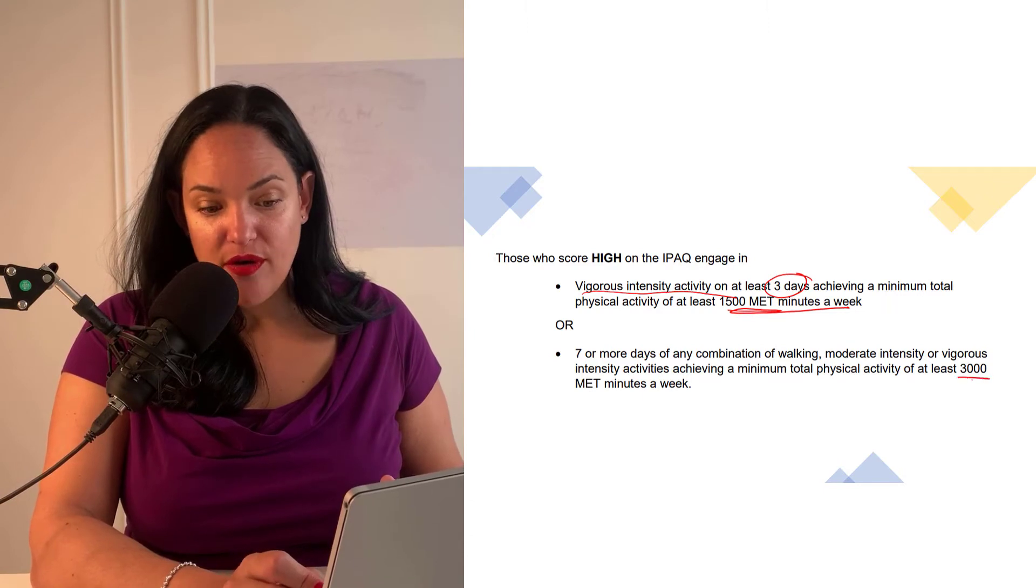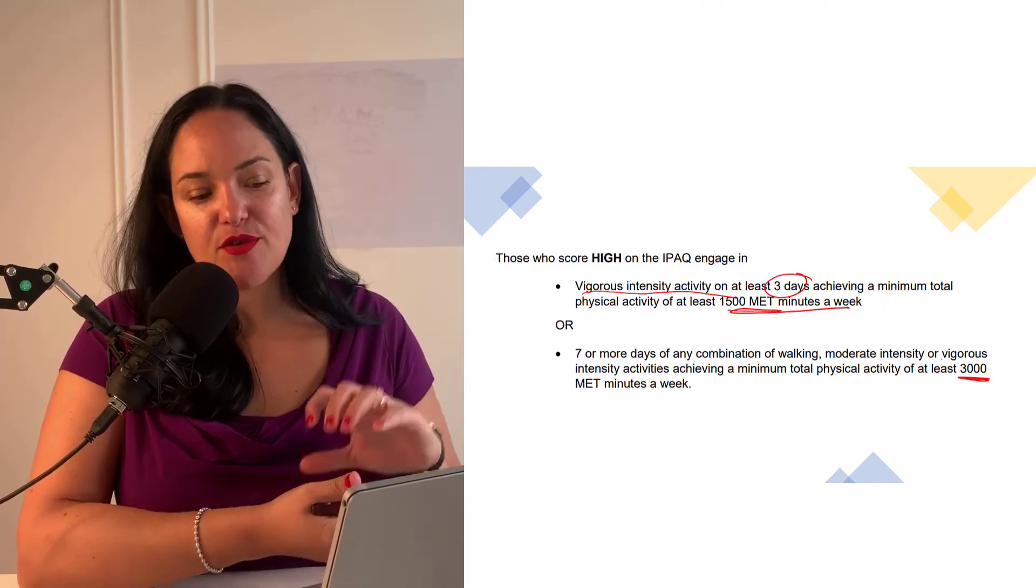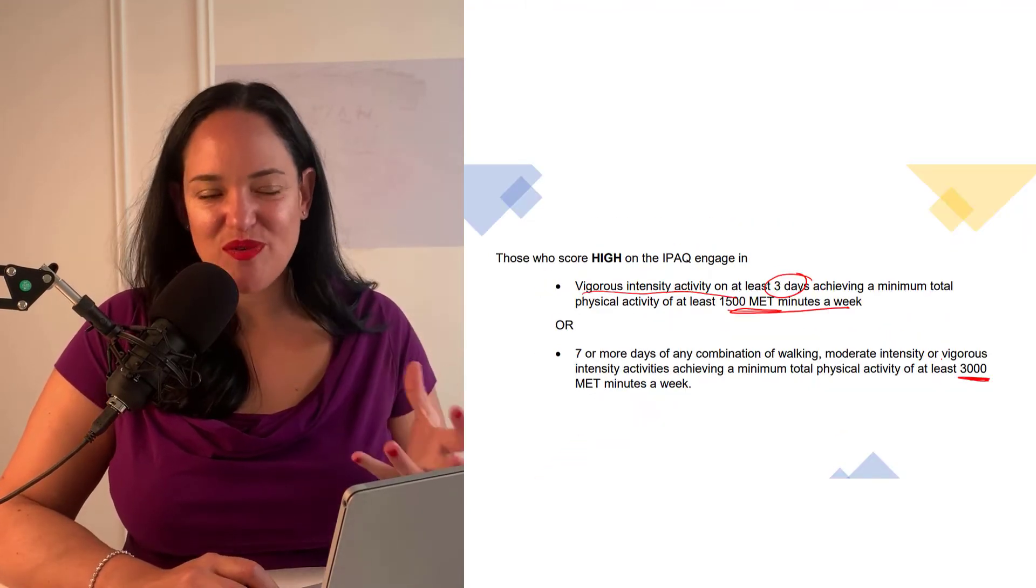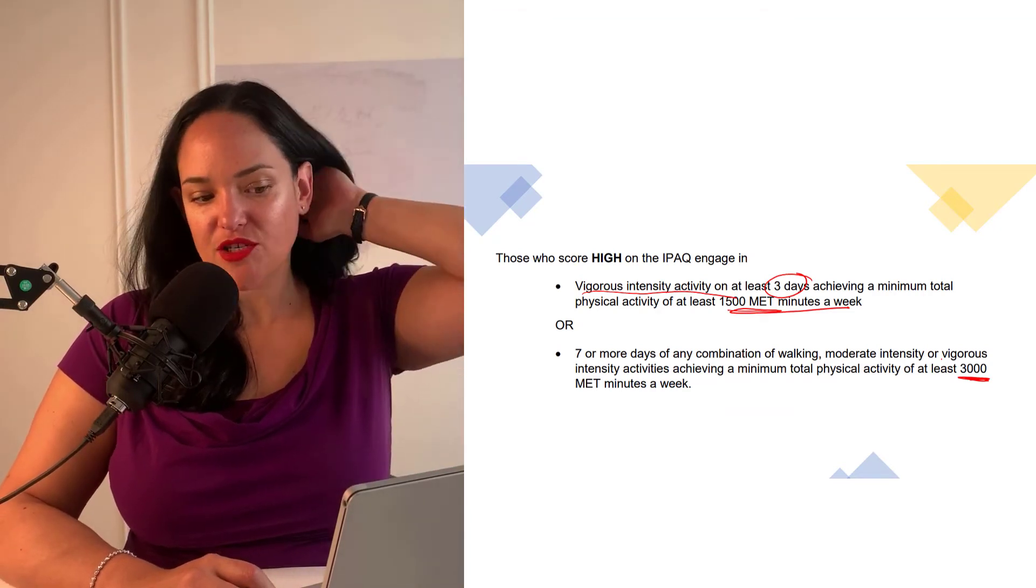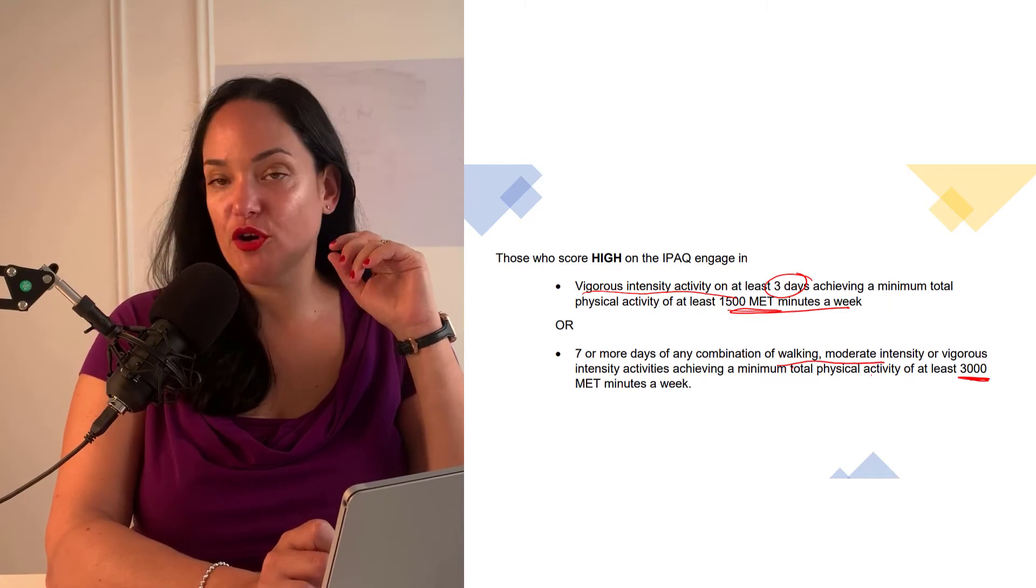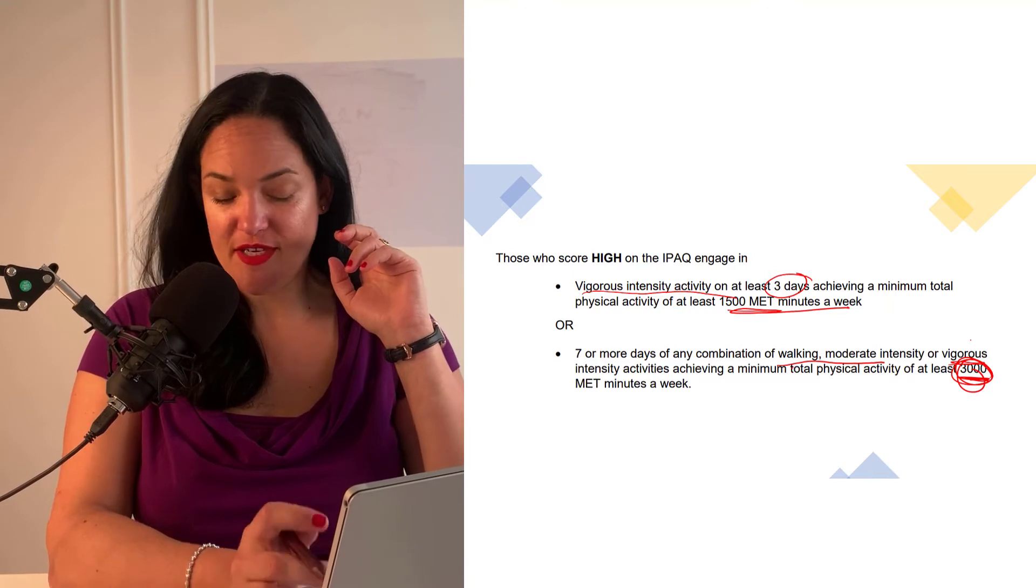Or they get over 3,000 total combining all those other three, they get 3,000 total MET minutes per week. So for this one, a high physical activity score on the IPAQ, someone could actually get that by just completing walking or moderate intensity activities and never completing vigorous activities, but they're just getting a lot of it.